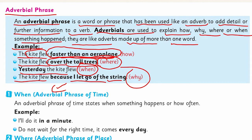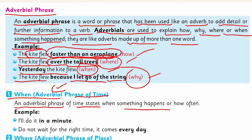So, the adverbial phrase tells you how, where, when, and why the action is done. An adverbial phrase of time states when something happens or how often.